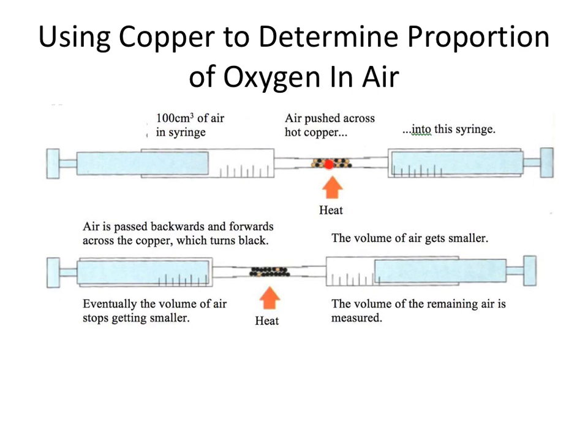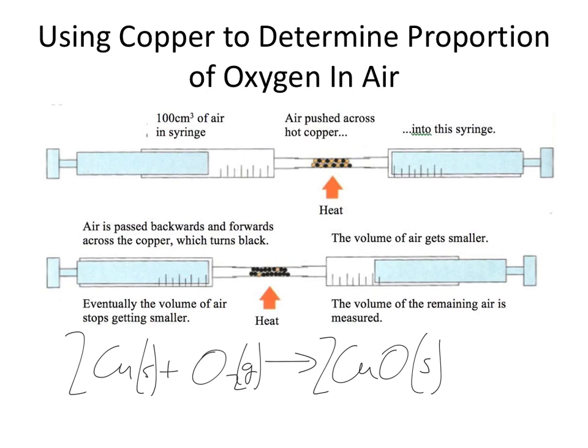When the copper is cold, nothing happens, but if you are heating the copper as you push the air across, the oxygen in the air reacts with the copper. You actually get a reaction: copper plus oxygen goes to copper oxide. We should balance that equation: 2Cu + O2 → 2CuO. Copper is a solid, oxygen is a gas, and copper oxide is also a solid. You should know the colors: copper is orange and copper oxide is a black powder, as you can see from this diagram.